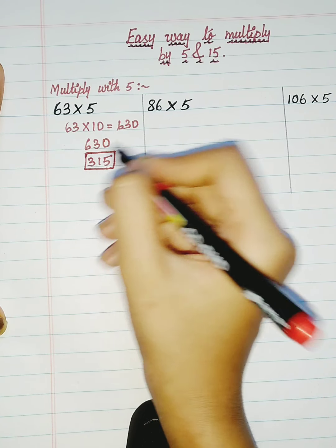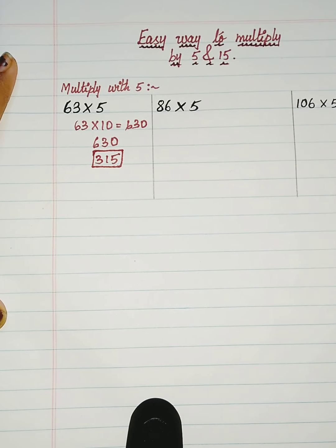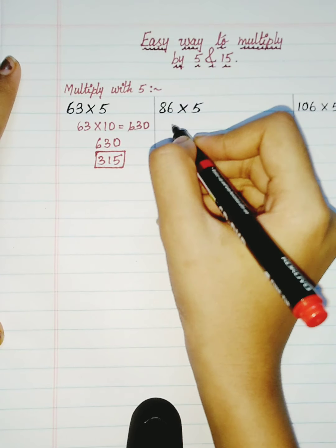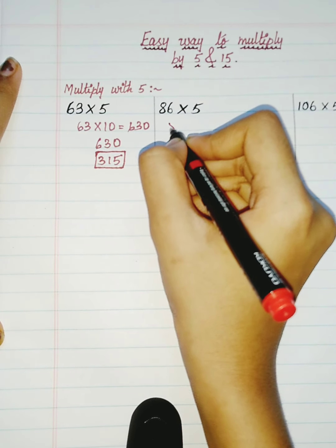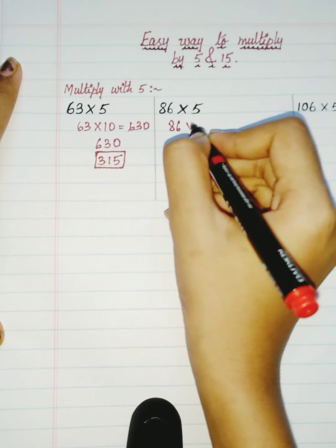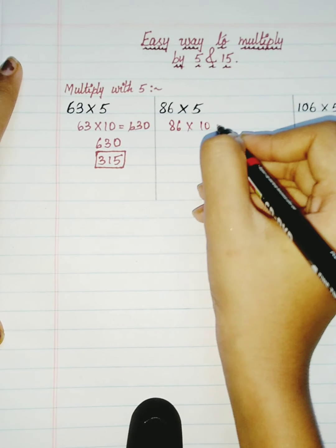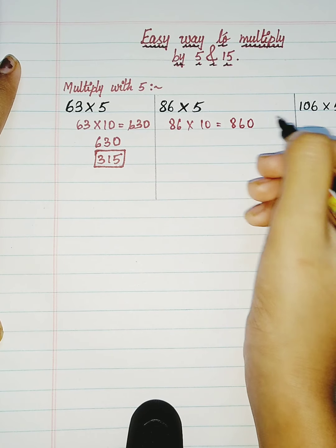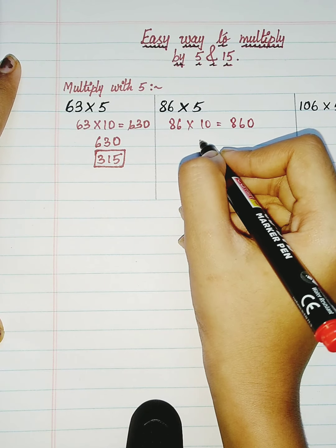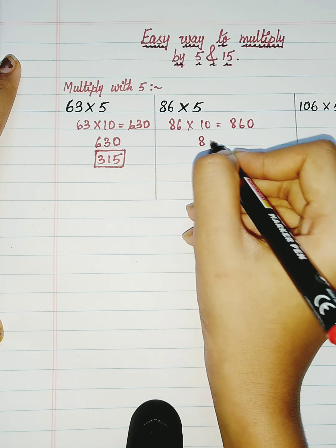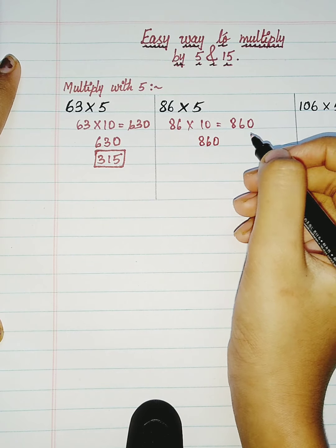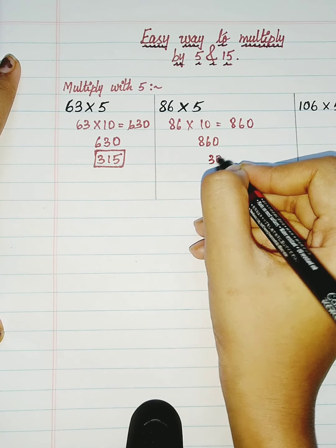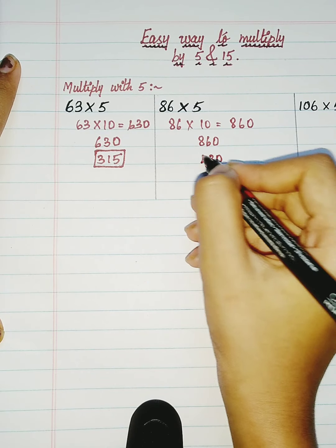Now same way for the second one: 86 into 10 is equal to 860. Now with the result, make it into half — half of 60 is equal to 30, and half of 8 is equal to 4. So 430 is our answer.